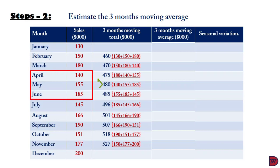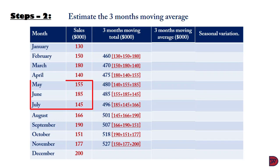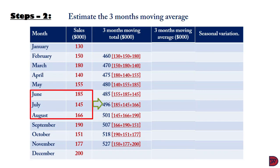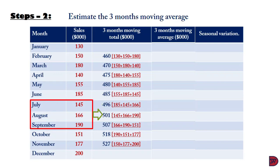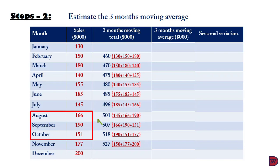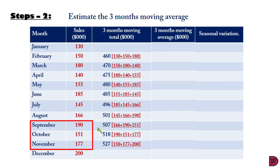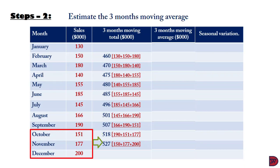Continuing the 3-month totals: May, June, and July gives $485,000; June, July, and August gives $491,000; July, August, and September gives $496,000; August, September, and October gives $507,000; September, October, and November gives $518,000; and lastly October, November, and December gives $527,000.